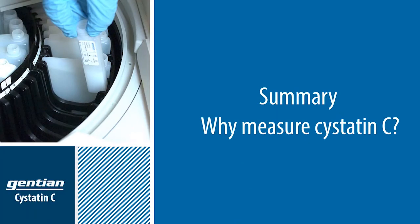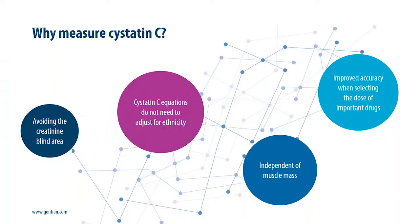We now conclude this webinar with one final question that will hopefully summarize the most salient points of this presentation: why measure CYSTATIN-C? CYSTATIN-C is produced at a steady rate in the body, is freely filtered by the glomerulus, and is almost completely degraded within the proximal tubule.